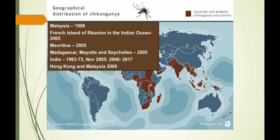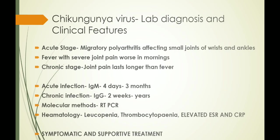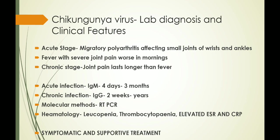Chikungunya virus is maintained in an urban cycle between humans and the Aedes mosquito, and a sylvatic cycle between monkeys and forest species. The name chikungunya derives from the word 'kungunyala' meaning the person bends or gets folded up. Clinically, the patient has migratory polyarthritis affecting small joints of the wrist and ankle, more severe in the morning, along with fever. Compared to dengue, the bone pain in chikungunya is much more severe and lasts much longer.